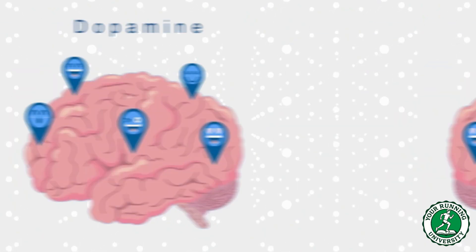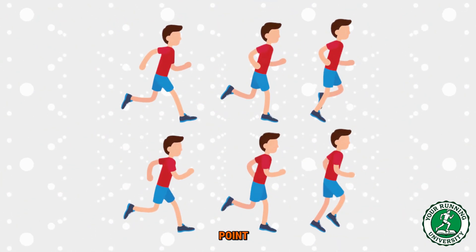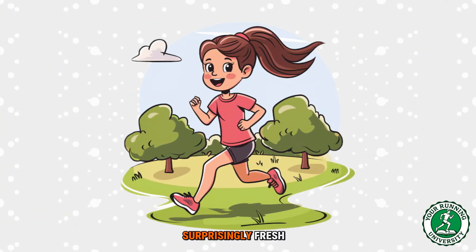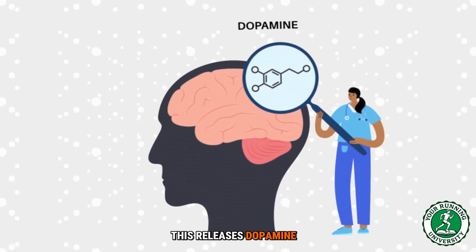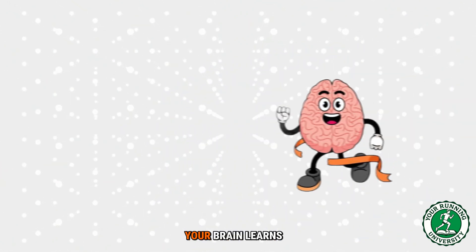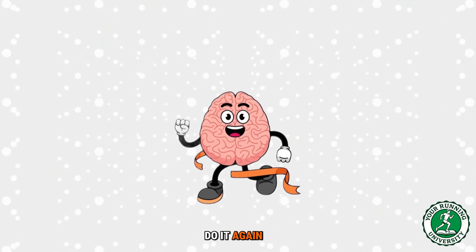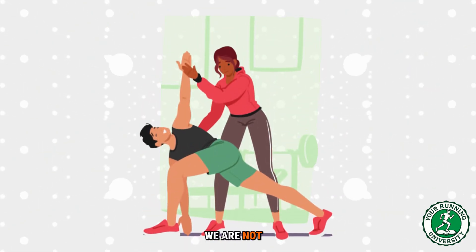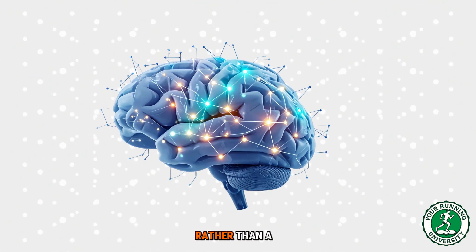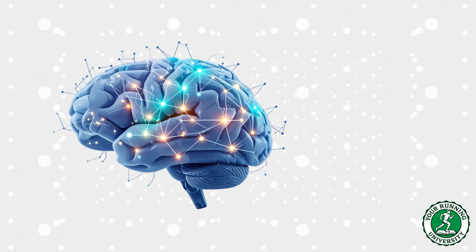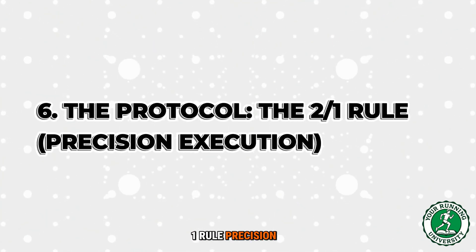The dopamine hack: the walk-run method ensures you never hit that panic point. You finish the 30 minutes feeling surprisingly fresh, you feel successful. This releases dopamine — the reward molecule. Your brain learns a new pattern: running equals success, do it again. We are not just training your muscles — we are rewiring your neural pathways to create an addiction to running rather than a phobia of it.